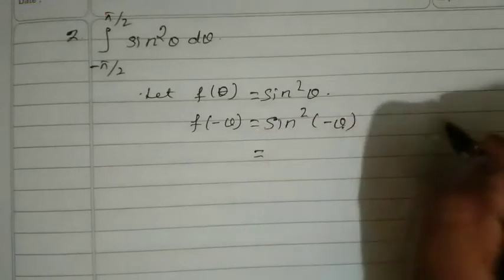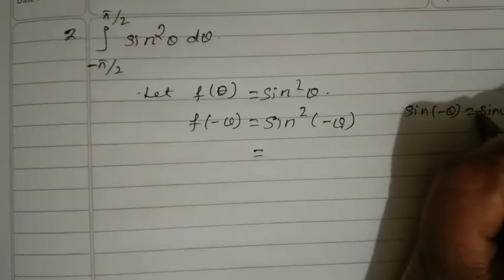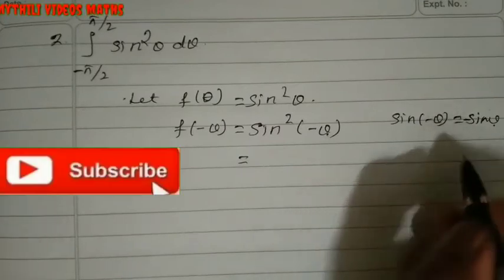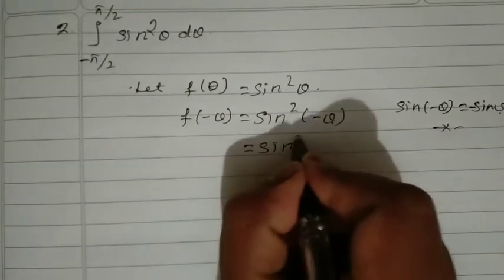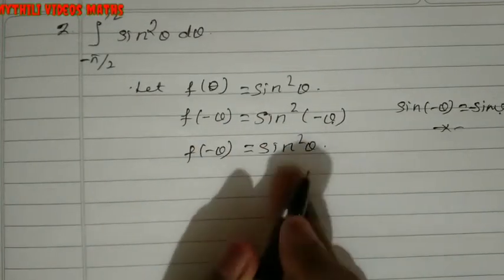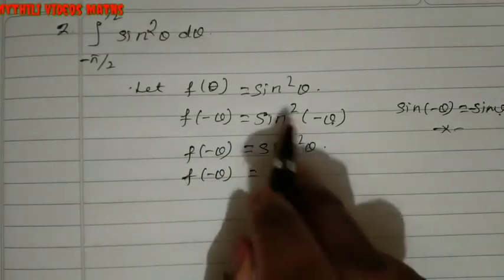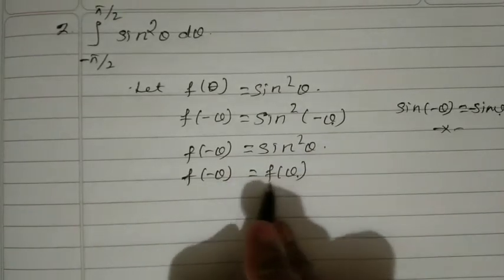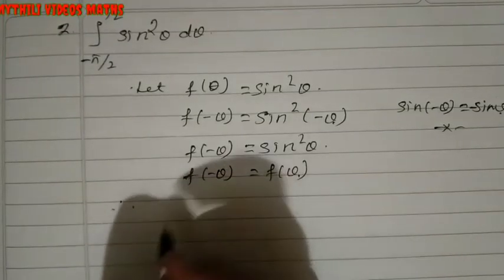Now sin(minus θ) equals minus sin θ. When we square it, minus times minus gives plus. So sin²(minus θ) equals sin²θ. Therefore f(minus θ) equals sin²θ, which equals f(θ). This is an even function.